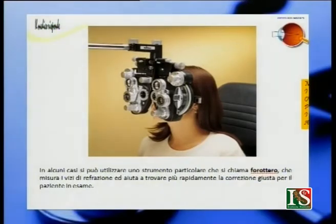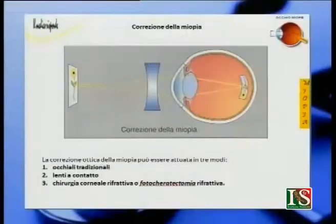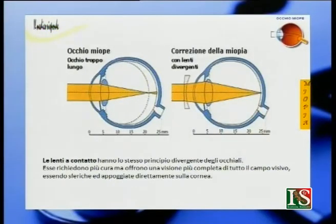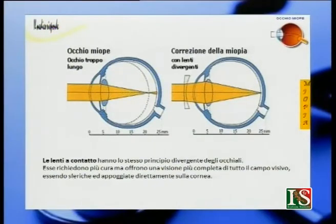Vediamo adesso l'importanza delle lenti a contatto. La correzione della miopia si può effettuare con le lenti tradizionali, con le lenti a contatto oppure con la chirurgia corneale rifrattiva o fotocheratectomia rifrattiva. Le lenti a contatto hanno lo stesso principio divergente degli occhiali, richiedono più cura ma offrono una visione più completa di tutto il campo visivo, essendo sferiche e appoggiate direttamente sulla cornea. Nel caso dell'occhio miope, con le lenti divergenti si ottiene una correzione completa e il fuoco va giusto sulla retina.